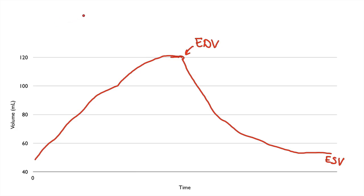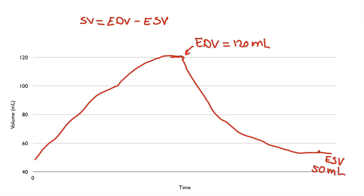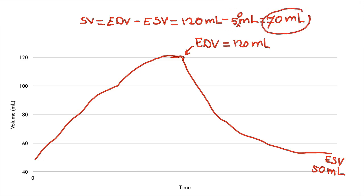The way we calculate stroke volume is: SV (stroke volume) equals EDV minus ESV. So if the end diastolic volume is 120 milliliters and the end systolic volume is 50 milliliters, the stroke volume is going to be 120 mL minus 50 mL, which equals 70 milliliters. I just noticed I wrote 5 — I meant to put 50, so 120 minus 50 equals 70. That would be my stroke volume.